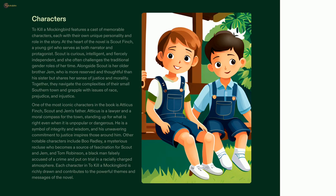One of the most iconic characters in the novel is Atticus Finch, Scout and Jem's father. Atticus is a lawyer who stands up for what is right even when it is unpopular or dangerous. His unwavering commitment to justice makes him a symbol of integrity and wisdom throughout the story. Another famous character is Boo Radley, a mysterious recluse who fascinates Scout and Jem. Tom Robinson is also a key character — a Black man who is falsely accused of a crime and put on trial in a racially charged environment. Each character is written with depth and complexity, making it a timeless classic.